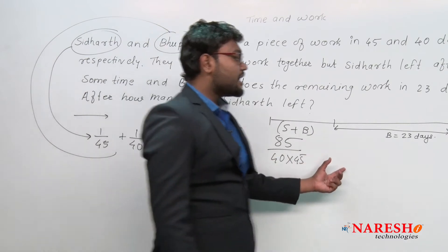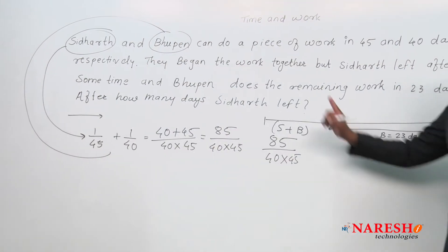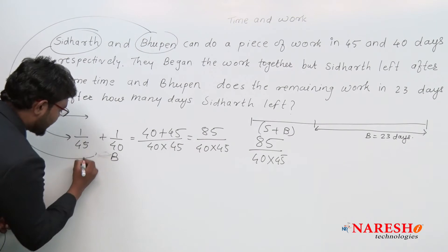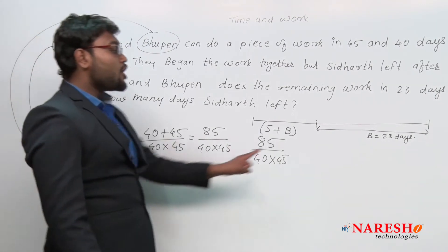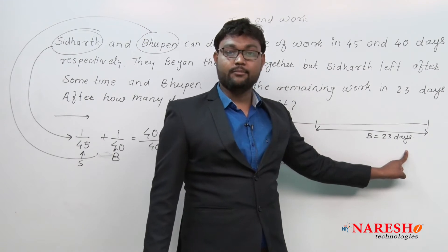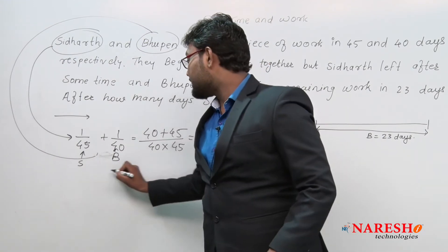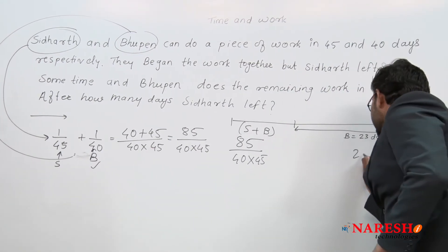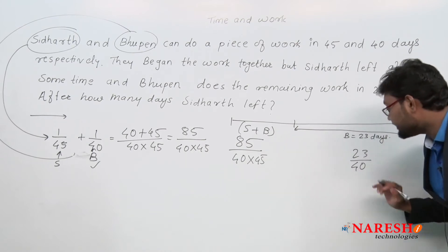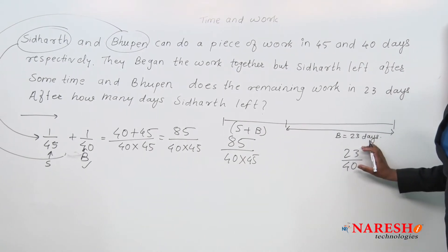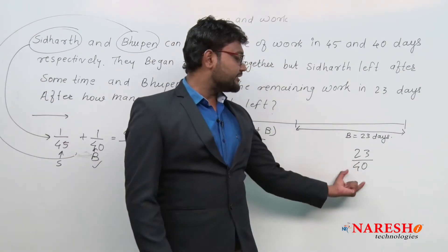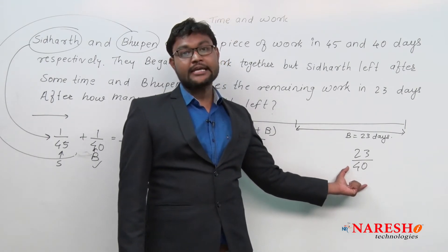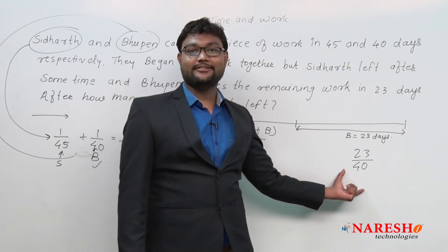One day's work of Bhupen is 1/40, and one day's work of Siddhartha is 1/45. Now, Bhupen worked 23 days alone, and his one day's work is 1/40, so his 23 days' work will be 23/40. This 23/40 is the work done by Bhupen in 23 days.